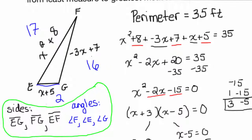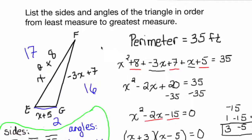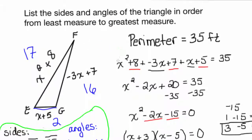The key takeaway from this problem: if we're given the perimeter, add up all the sides and set it equal to the perimeter. Most importantly, just because you get a negative value of x does not mean you should rule it out. What matters is that when you plug it into the sides, all your side lengths are positive. The value of x can be negative, but the side cannot.